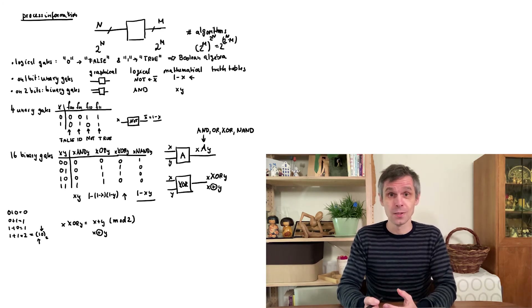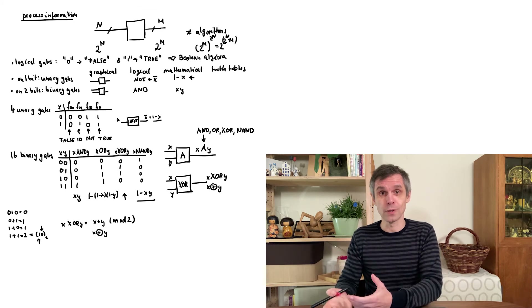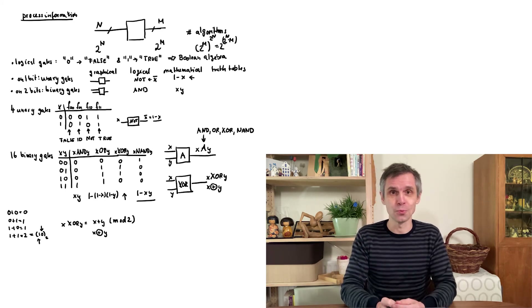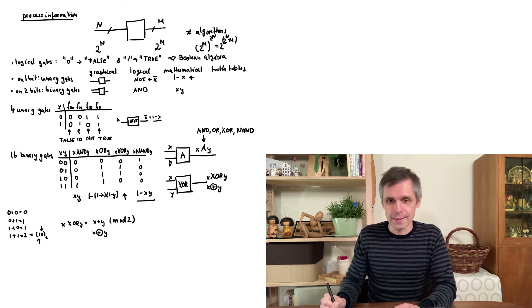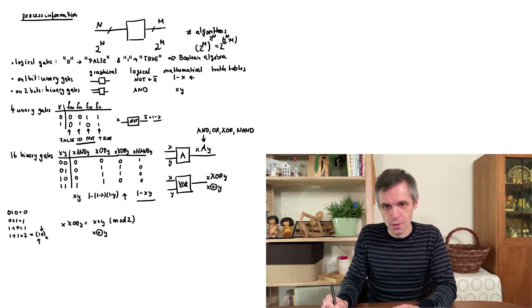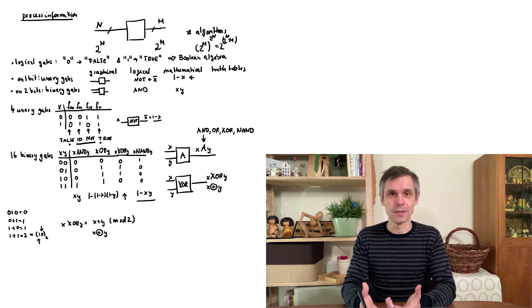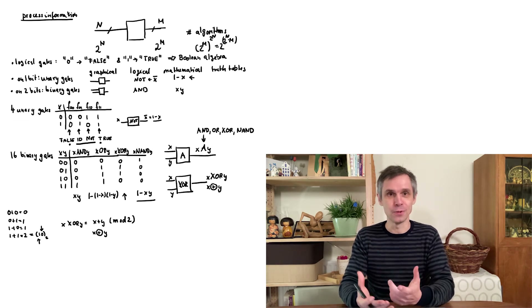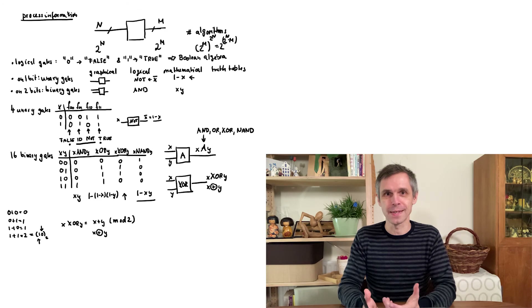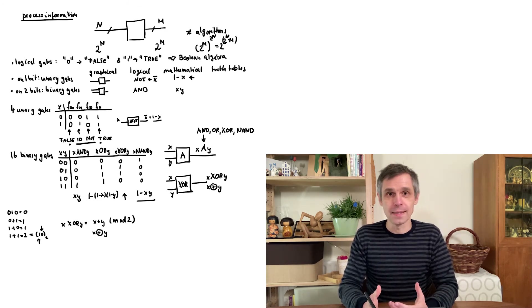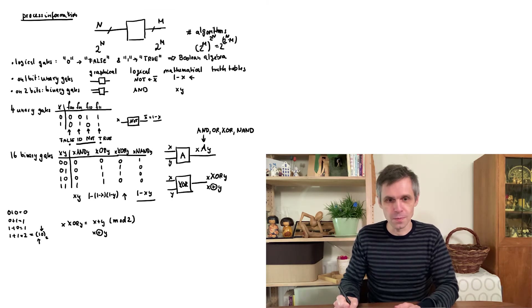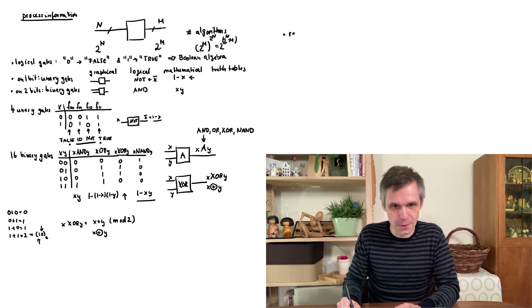A very interesting aspect of these gates from a fundamental perspective is that almost none of them are reversible — you cannot retrace your information from the output back to the input. For unary gates it doesn't look too bad: in two cases we can retrace the input, but in the other two cases the output is independent of the input. For binary gates it is even worse because we have only a single output for two inputs, so in none of these cases can we reconstruct the input. This leads to the idea of building a completely reversible computer using reversible gates.